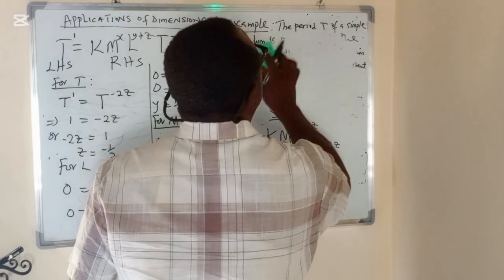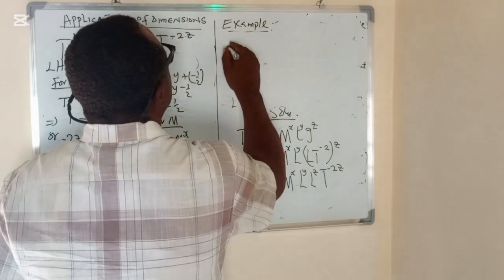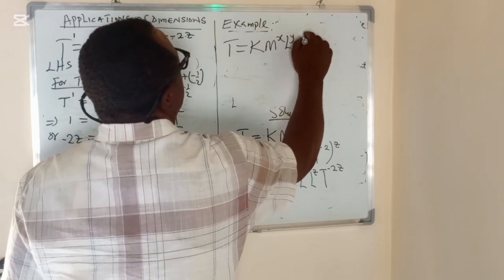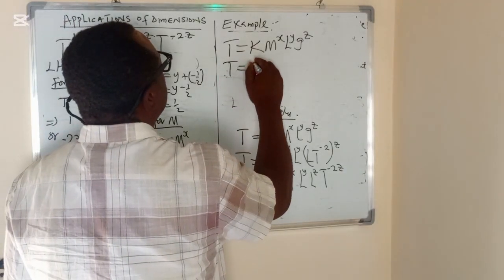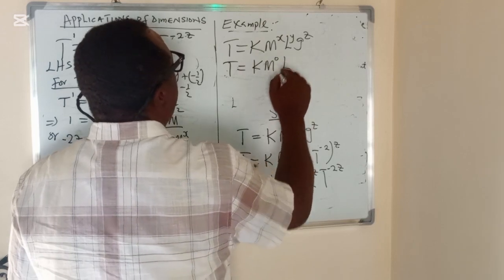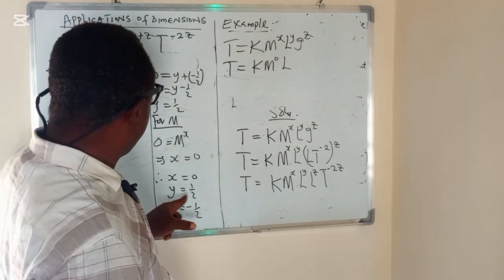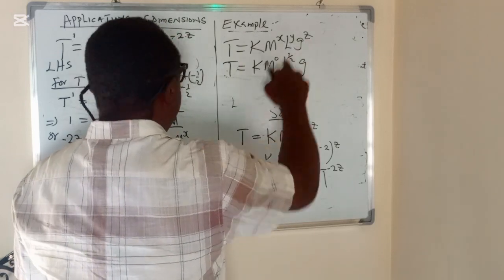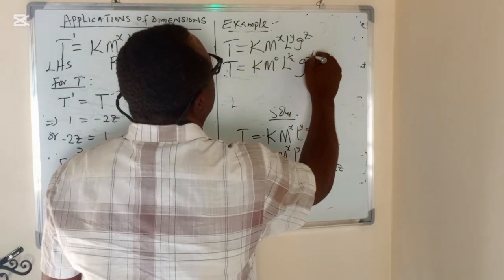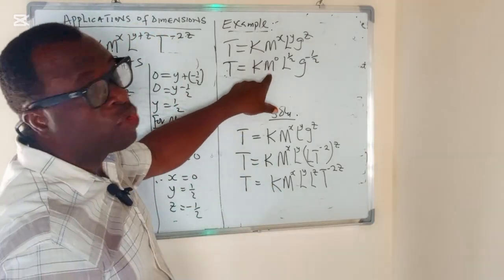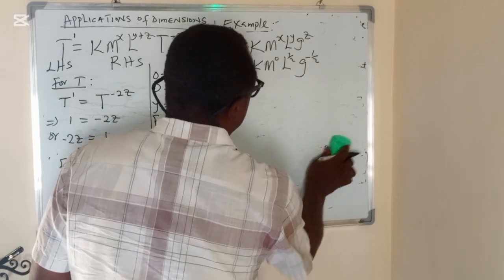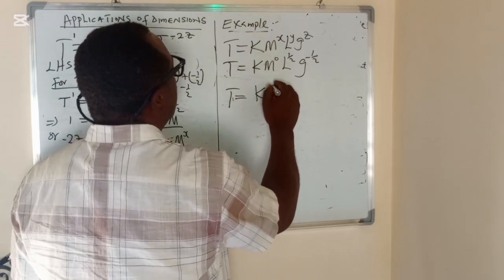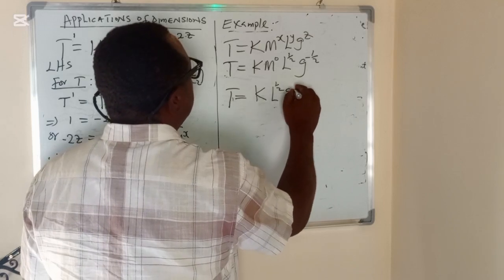The formula is T = K·M^X·L^Y·G^Z. Substituting our values: T = K·M^0·L^(1/2)·G^(−1/2). Since anything raised to the power 0 equals 1, M^0 = 1, so we can write T = K·L^(1/2)·G^(−1/2).